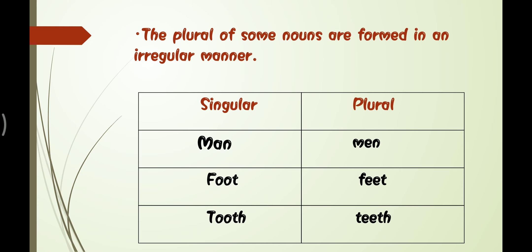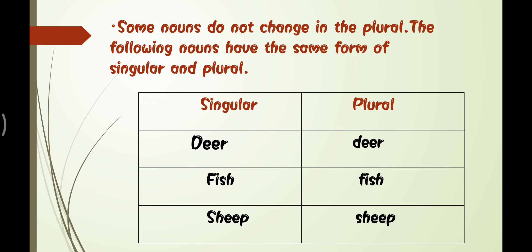Some nouns do not change in the plural at all. The following nouns have the same form for both singular and plural: deer, fish, and sheep. These three words are the same in singular and plural — there are no changes.